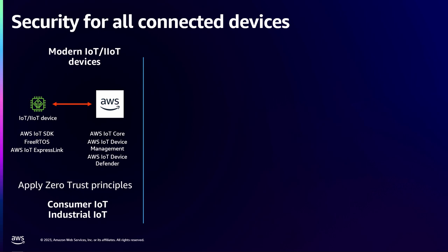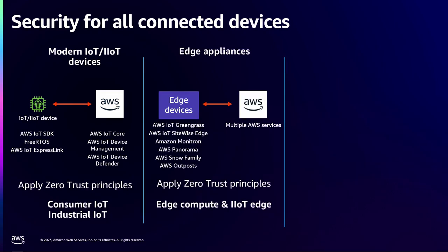With all these threat vectors, it is important that you monitor all your connected devices. These include microcontroller devices used in consumer IoT as well as industrial IoT. For these devices, it is possible to use and apply zero-trust security principles when connecting to AWS IoT services. The second class of devices are CPU devices — edge computers and edge appliances, more powerful machines — and it is also possible to apply zero-trust security principles when connecting to different services in AWS.